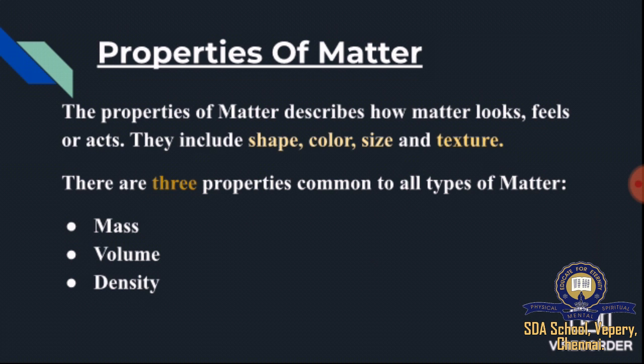Some of the properties of matter include shape, color, size, and texture. There are three properties common to all types of matter. They are known as mass, volume, and density.